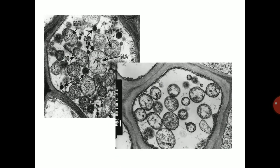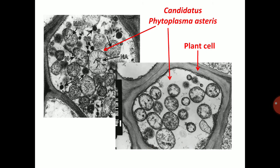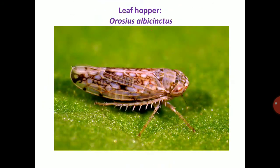Phytoplasma are pleomorphic — that means they have various shapes. Candidatus Phytoplasma asteris can appear in various shapes inside the plant cell and is mainly present in phloem sieve tubes. The leafhopper Orosius albicinctus mainly transmits the phyllody disease.